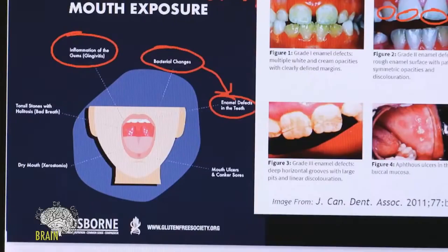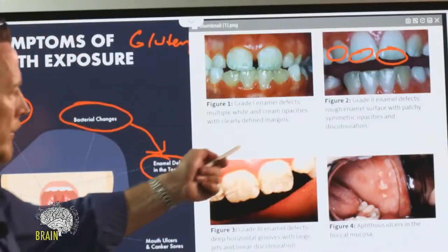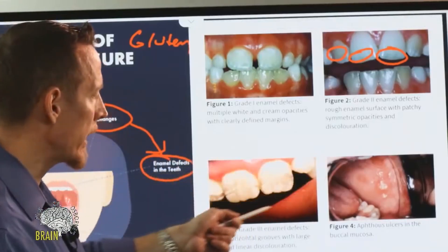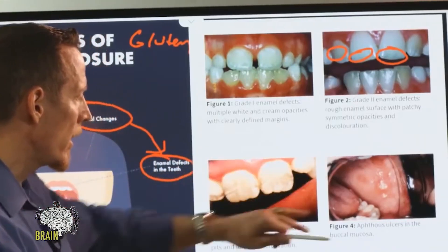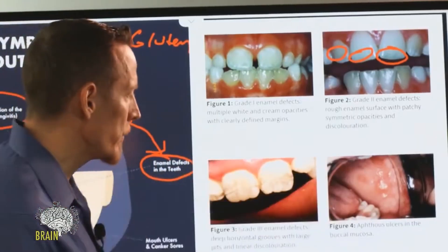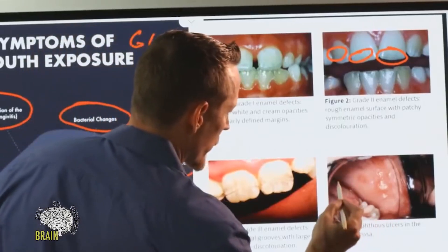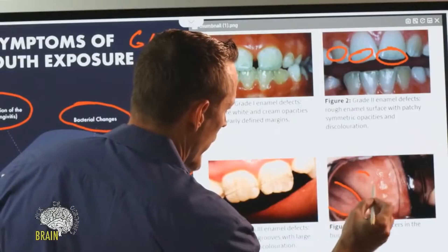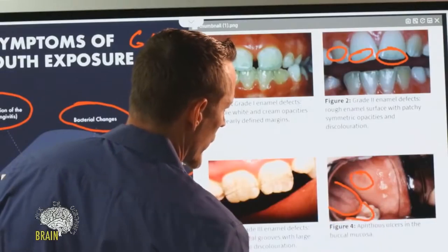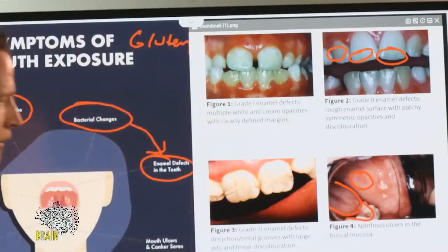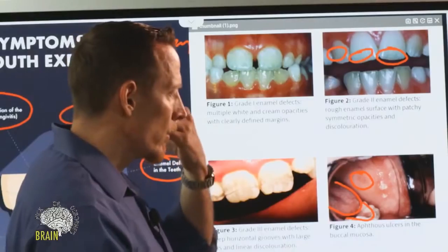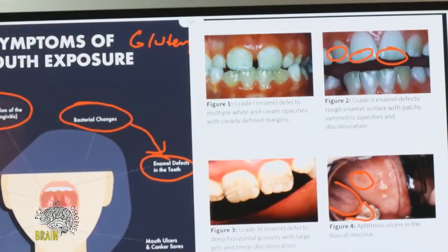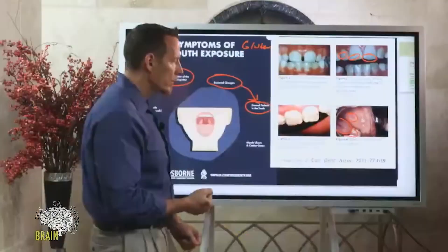This is quite severe — you don't want it to get to this point. When your enamel goes, cavities or caries can really start to form. In this final picture you can see the lower teeth, and circled here is an aphthous ulcer — an ulcer on the side of the cheek — which is another common manifestation of gluten sensitivity in the mouth.